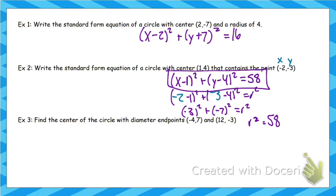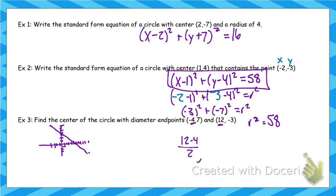Now we want to find the center and the circle gives us the diameter endpoints: (−4, 7) and (12, −3). The diameter is twice the radius, so the center is the midpoint of those two endpoints. To find the midpoint, add the x's and divide by 2, then add the y's and divide by 2. So 12 plus (−4) is 8, divided by 2 is 4. And 7 plus (−3) is 4, divided by 2 is 2. So the center is (4, 2).